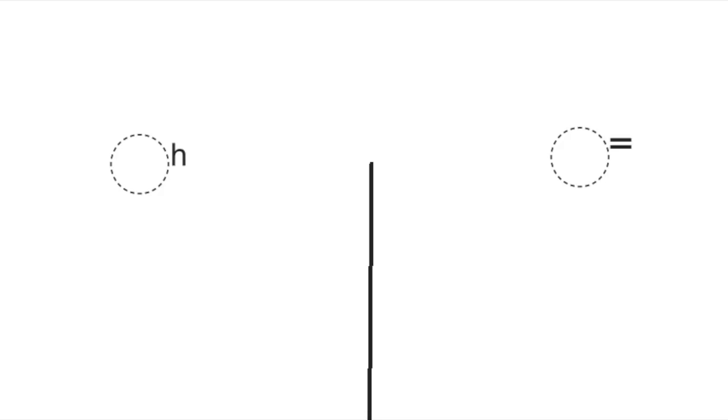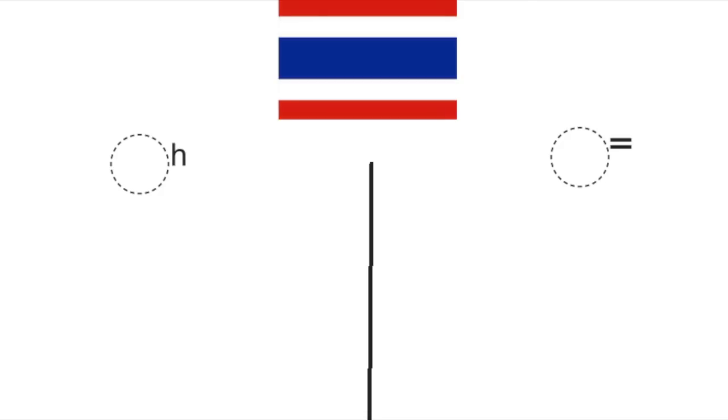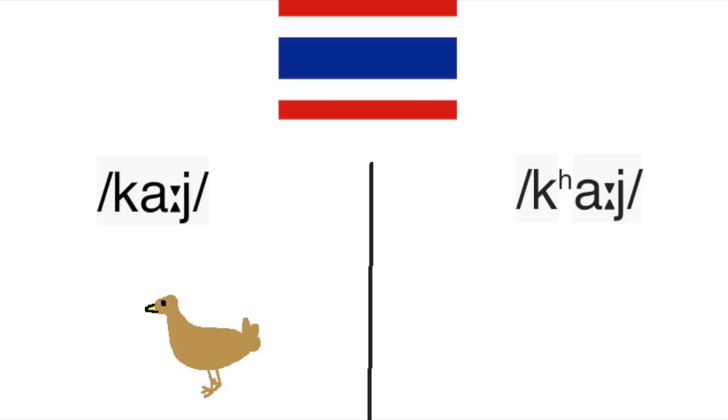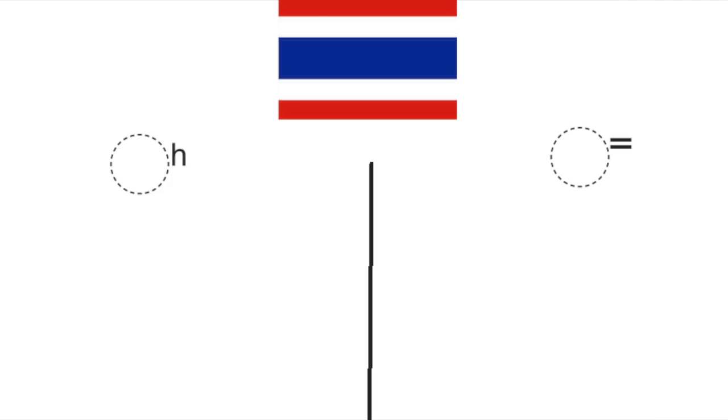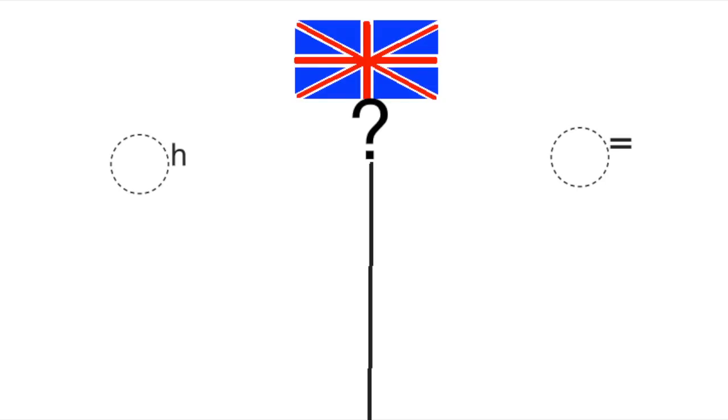But in some languages, they actually differentiate between words depending on whether they aspirate the sounds or not. Like in Thai, where 'kai' with an unaspirated K means 'chicken', but 'kai' with an aspirated K means 'egg'. So does the fact that they're two different sounds in Thai mean that we have to start writing them as two different sounds in English?